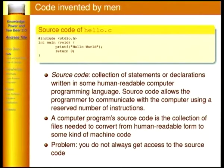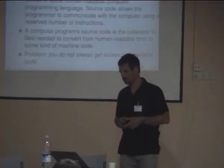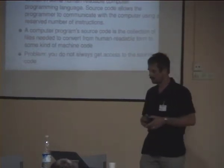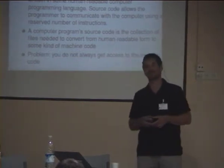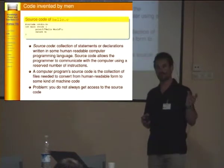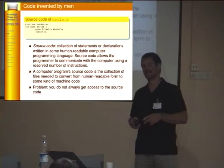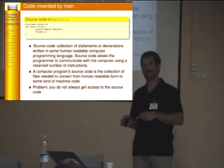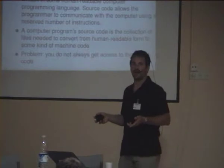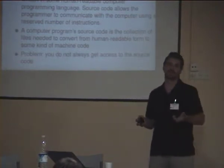Then we have source code, which is a collection of statements written in human-readable language. Source code allows the programmer to communicate with the computer using a number of instructions. It is easy to read by men, but the problem is you don't always have the code. There are people who hide the knowledge of how to read machine code — but this is a problem, because why should we hide knowledge that mankind has invented?